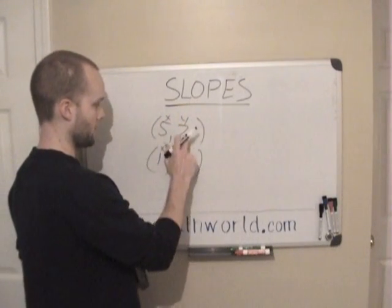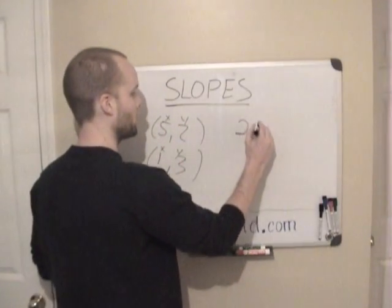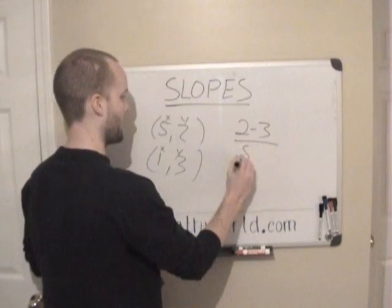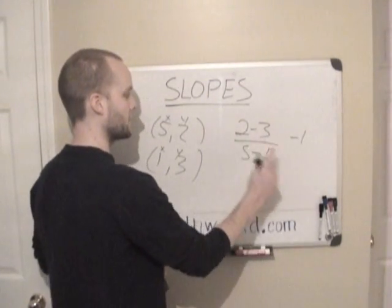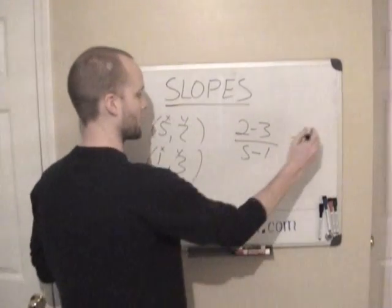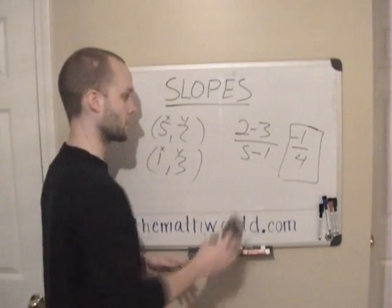So what we can do from here is, first thing we're going to do, remember this is x and this is y. We're going to do 2 minus 3 divided by 5 minus 1. And this is negative 1 up top, and this is 4 on the bottom. So our slope here is minus 1 over 4.